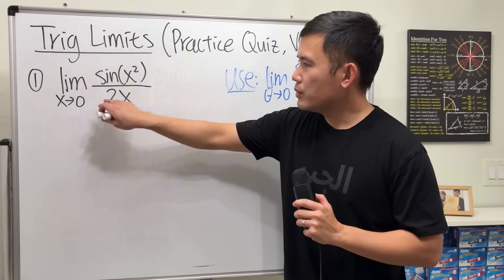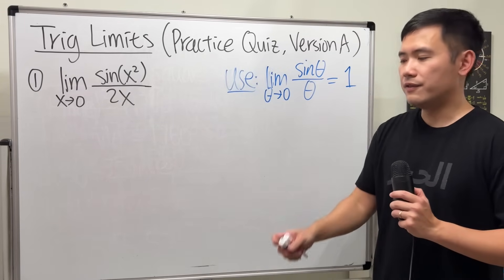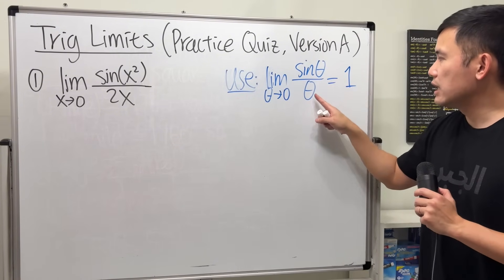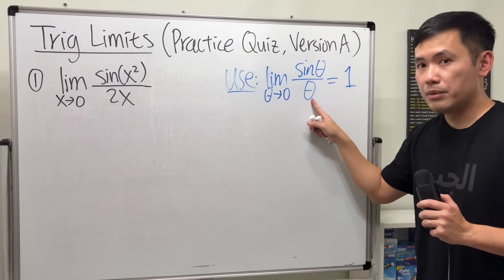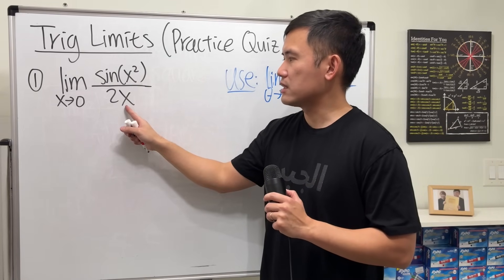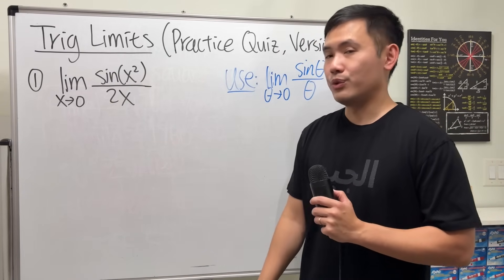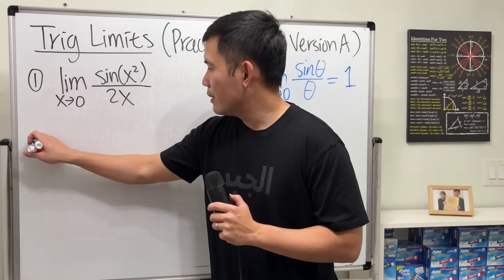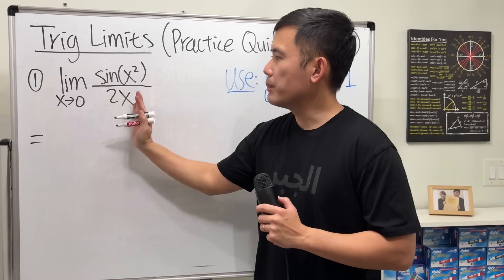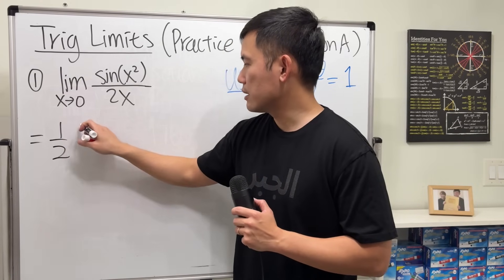So how are we going to use this to solve that? Notice the input here is x squared, and the denominator is just x multiplied by 2. We can pull the 1/2 out as a constant multiple on the outside — that's okay.